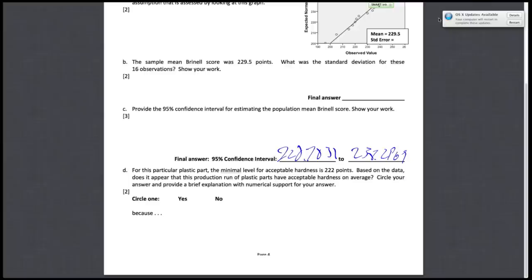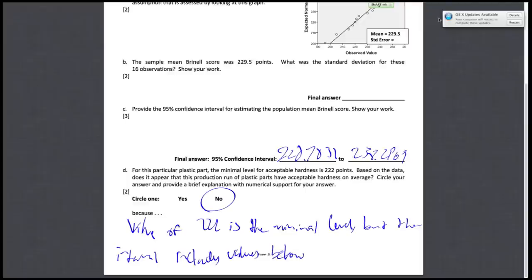We can say that this production run of plastic parts does not have the acceptable hardness on average, because there could be values for the minimal level of acceptable hardness that are below 222. So we'll just say no, because the value of 222 is the minimal level, but the interval includes values below 222. So that's it for question five.